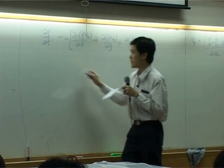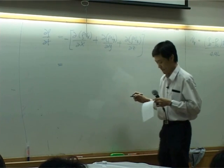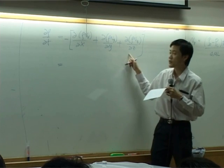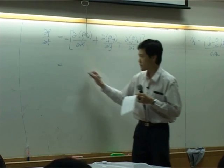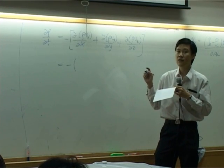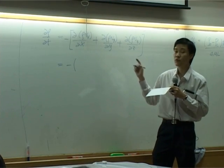All right, now, when you have three terms like this, you can reinterpret it as a dot product of two vectors.